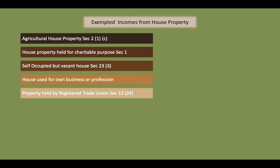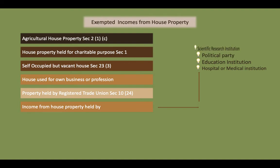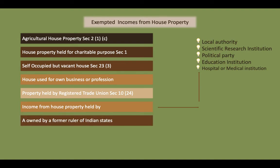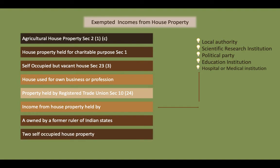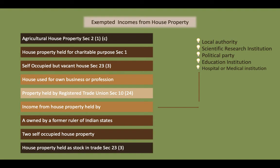Property held by a registered trade union is not to be included in gross total income. Income from house property held by hospitals, medical institutions, educational institutions, political parties, scientific research institutions, and local authorities is totally exempted from tax. A palace owned by a former ruler of Indian states is exempted from tax. Two self-occupied house properties of an assessee are exempted. House property held as stock-in-trade and not let out during the previous year is not taxable under this head.